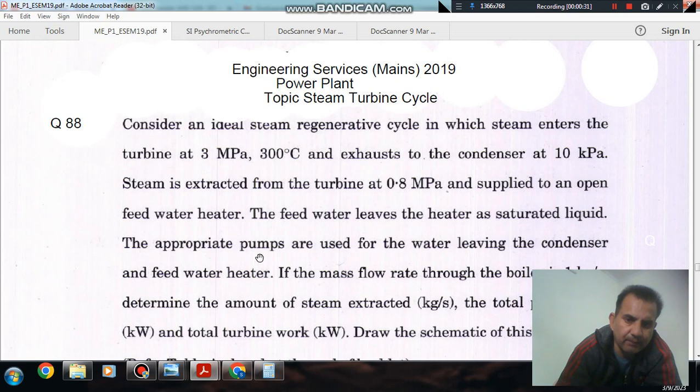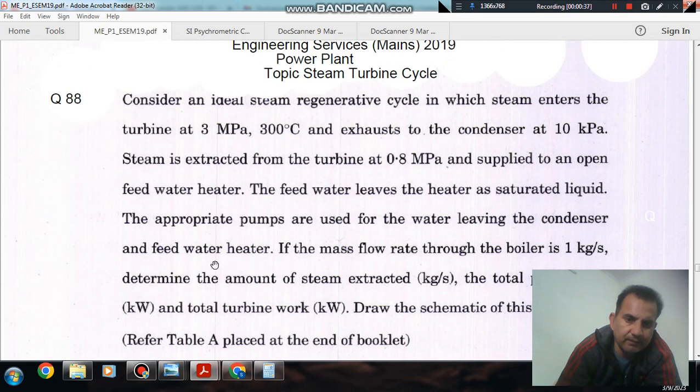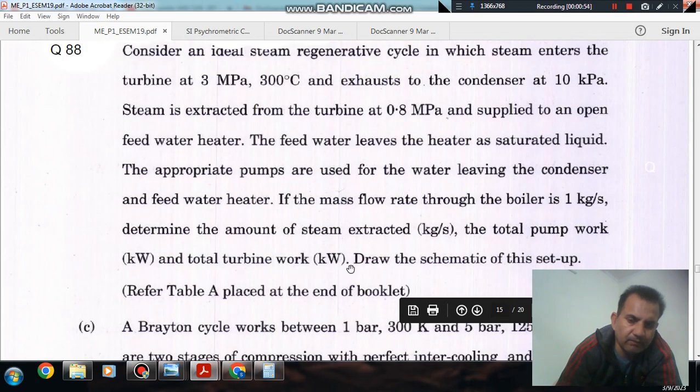The feedwater leaves the heater as saturated liquid. The appropriate pumps are used for the water leaving the condenser and feedwater heater. If the mass flow rate through the boiler is 1 kg per second, determine the amount of steam extracted in kg per second, the total pump work in kilowatts, and total turbine work in kilowatts. Draw the schematic of the setup.